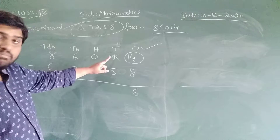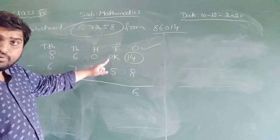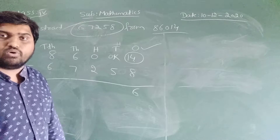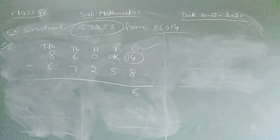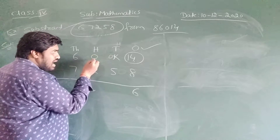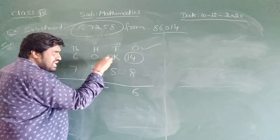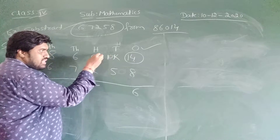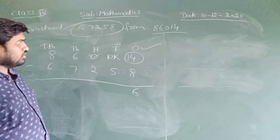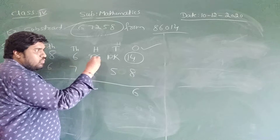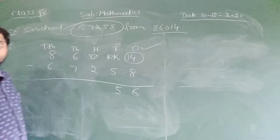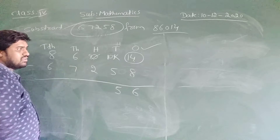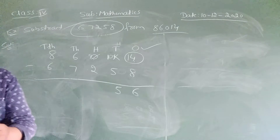Now in the tens place what is the number remaining? 0 — and 0 minus 5, is it possible? No, it is not possible. That's why again I am going to take 1 as the carry from the hundreds. I am going to take 1 carry here — then the tens becomes 10, then 10 minus 5 equals 5, and the hundreds digit becomes 9.